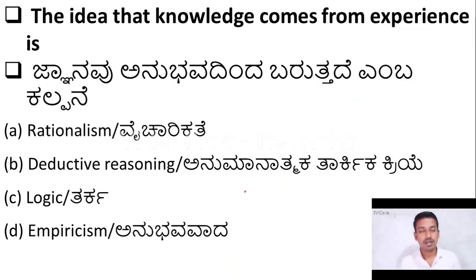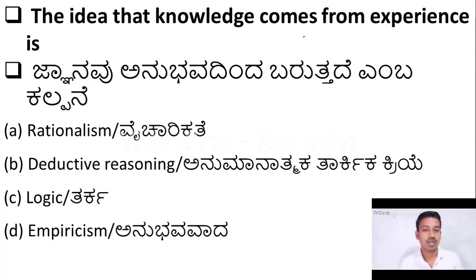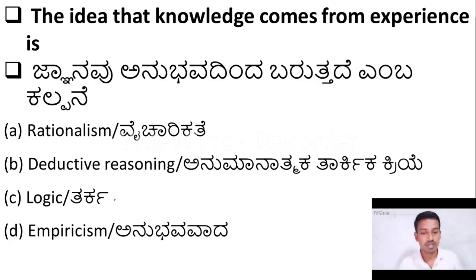The next question: the idea that knowledge comes from experience is known as — option A: rationalism; option B: deductive reasoning; option C: logic; option D: empiricism.